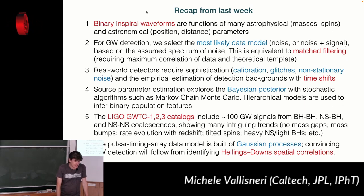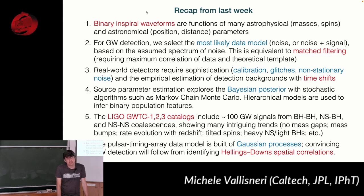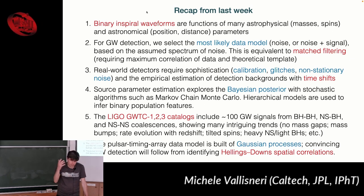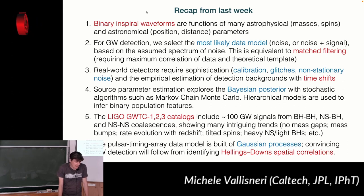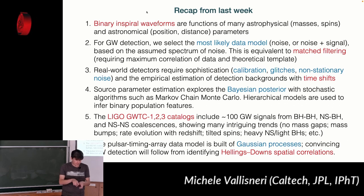Finally, we spent some time talking about pulsar timing array detection of gravitational waves, where everything is a Gaussian process, and you're modeling many types of unknowns simultaneously because you don't control the experiment — you build it using pulsars as a clock. I argued that you can get gravitational wave detection from a very specific signature: an isotropic background generates signals in pulsars at an angle with a very precise correlation structure known as the Hellings-Downs spatial correlation. Okay, that's where we left it.